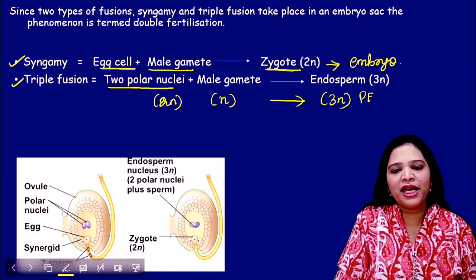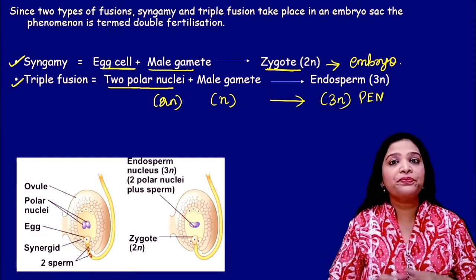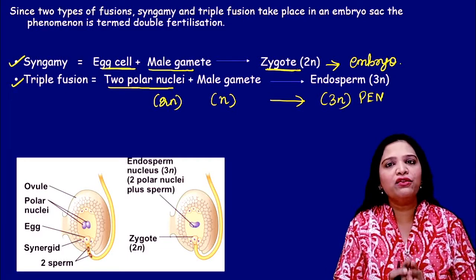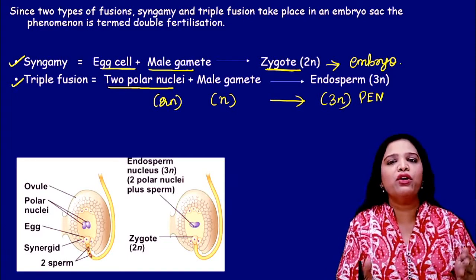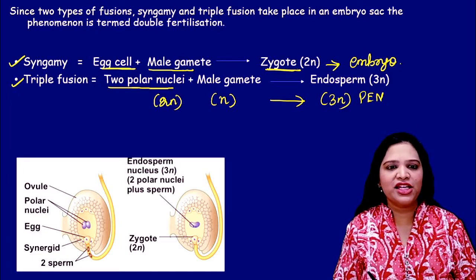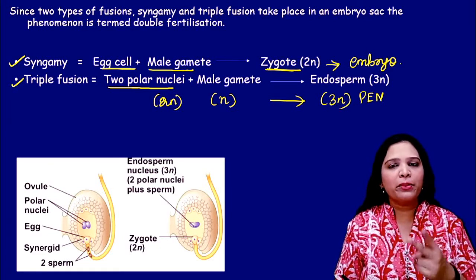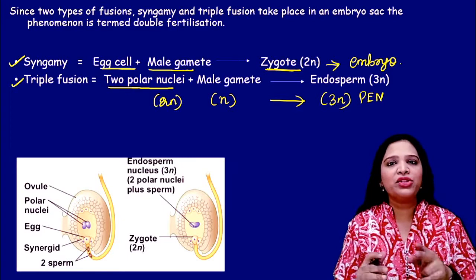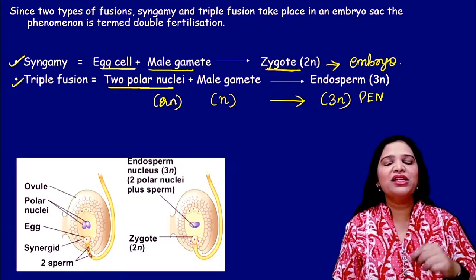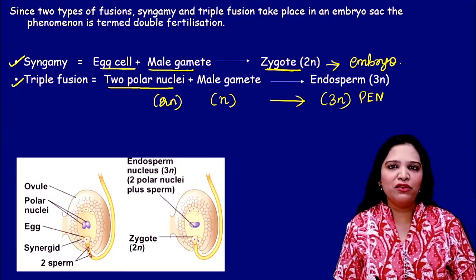The endosperm is the nutritive tissue — the food storage reservoir for the growing embryo. This is called double fertilization because in the angiosperms two male gametes are produced and both are involved in fertilization: one gamete fertilizes the egg cell, and the other fertilizes the two polar nuclei.